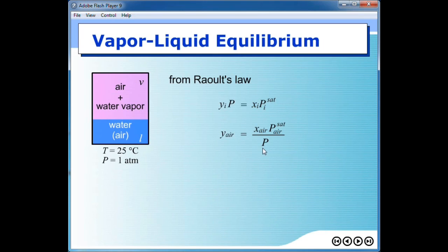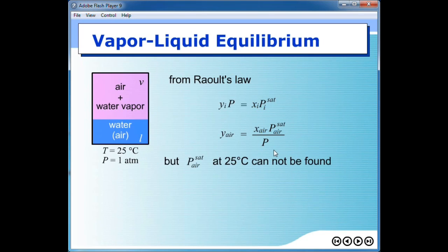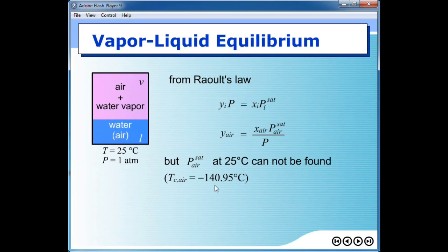On the other hand, if we want to repeat the calculation for air, the mole fraction in vapor phase of air can be written in terms of Raoult's law. But this time we have a problem because the vapor pressure of air cannot be found at 25 degrees Celsius — because the temperature of the system, 25 degrees Celsius, exceeds the critical temperature of air. Therefore, air is no longer a vapor; in this system, air is a gas. As long as it is a gas and not a vapor, we cannot find a vapor pressure, so the calculation cannot be done. That's why we cannot use Raoult's law for species with very low concentration in the liquid phase.